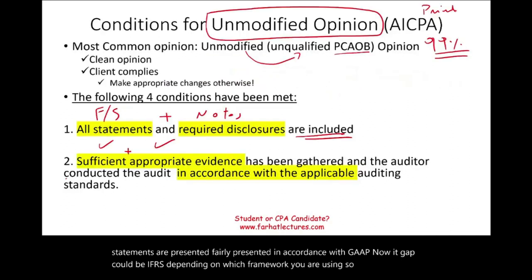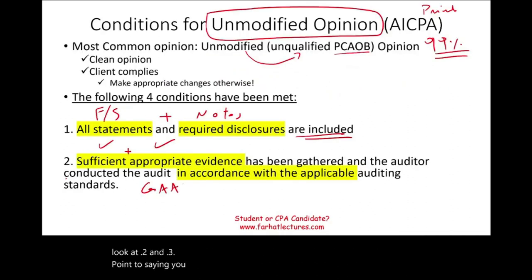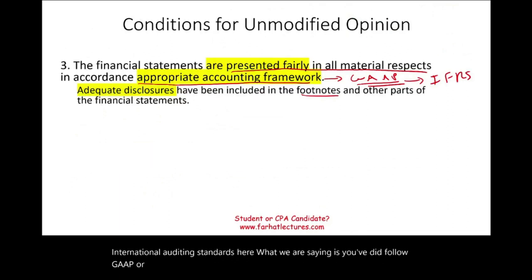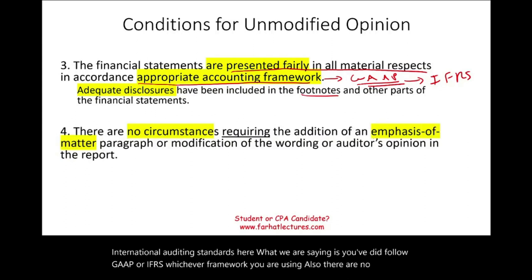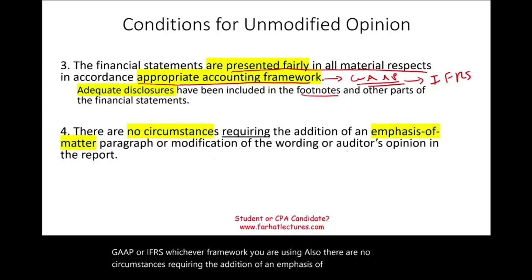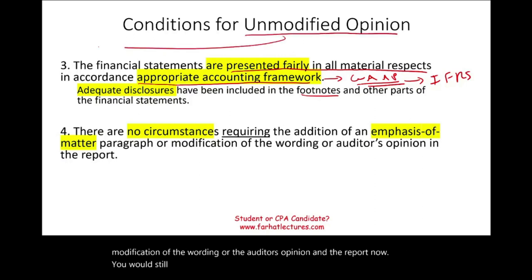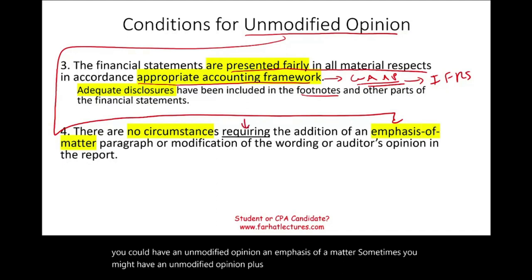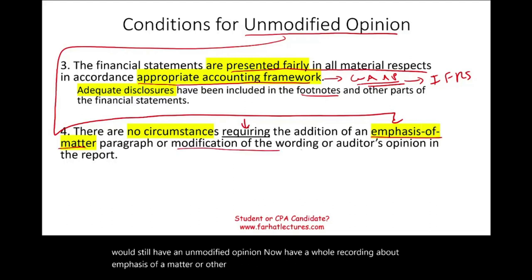Looking at conditions two and three together: condition two says you collected all the evidence according to GAAS or international auditing standards, and condition three says you followed GAAP or IFRS. The fourth condition is that there are no circumstances requiring the addition of an emphasis of matter paragraph or modification of the wording of the auditor's opinion. However, you can still have an unmodified opinion even if you have an emphasis of matter — you would still have an unmodified opinion with that addition.